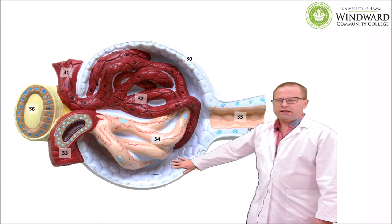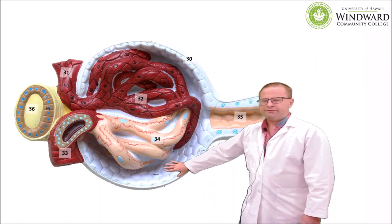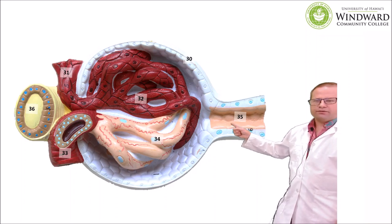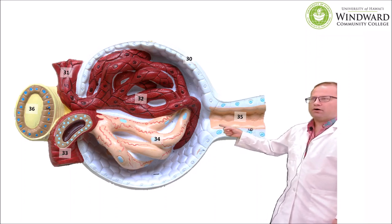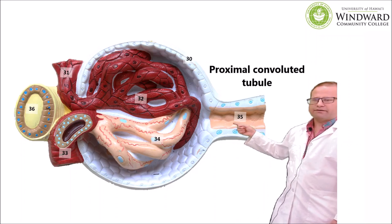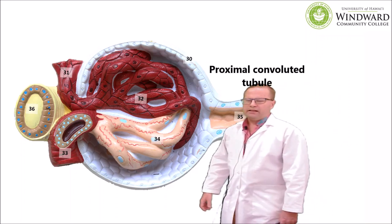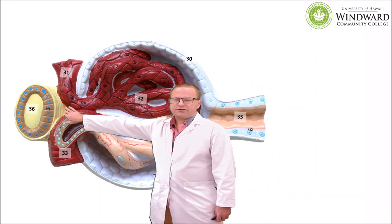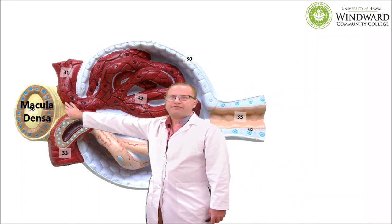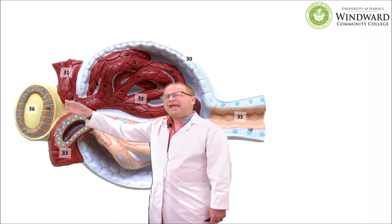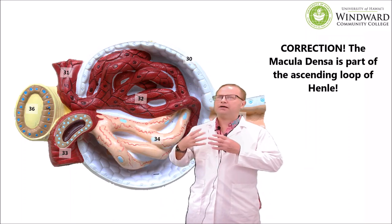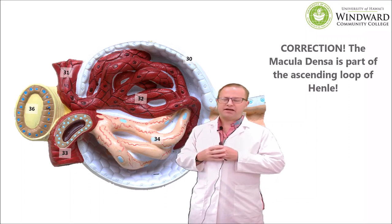The Bowman's capsule collects filtered fluid, which then moves into the renal tubule — specifically the proximal convoluted tubule. Last but not least, there is a structure called the macula densa, which sits in between the afferent and efferent arterioles. It's basically part of the distal convoluted tubule but it's important because it helps to regulate blood pressure inside the glomerulus.